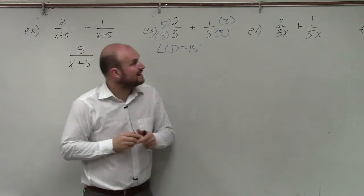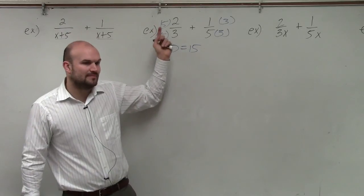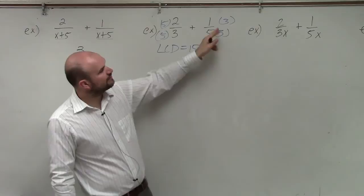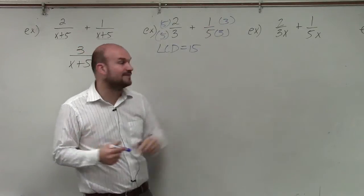The next biggest mistake that students make is they don't multiply the same number in the top and bottom. We need to make sure when we're doing this we are producing equivalent fractions. So whatever you multiply the numerator, you have to multiply the denominator.